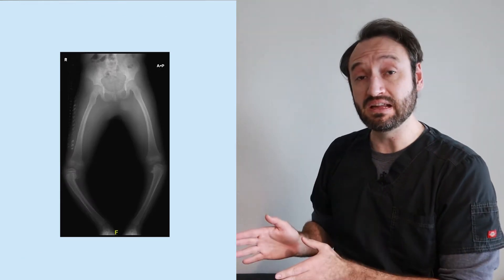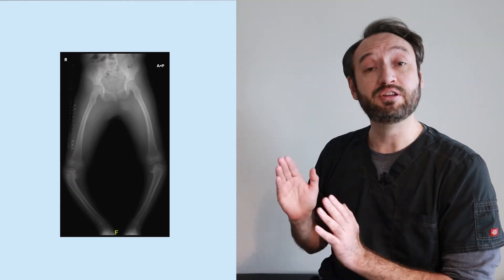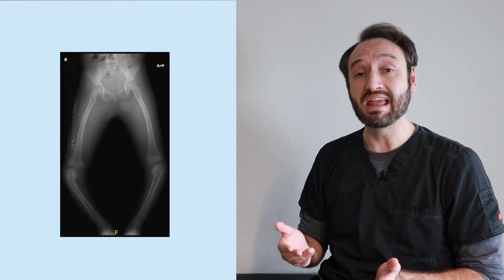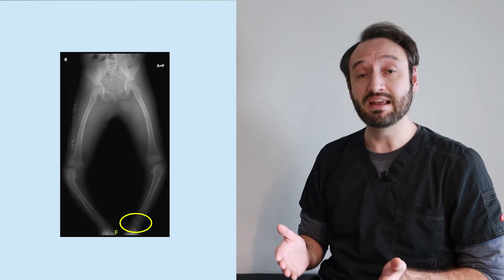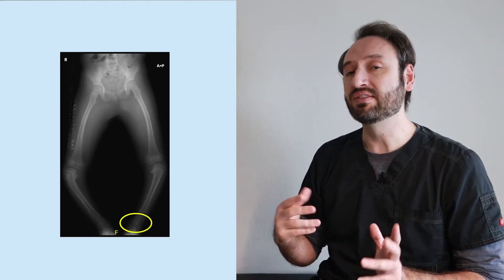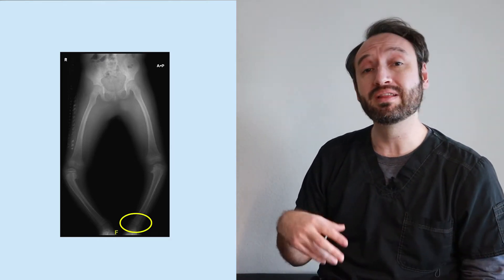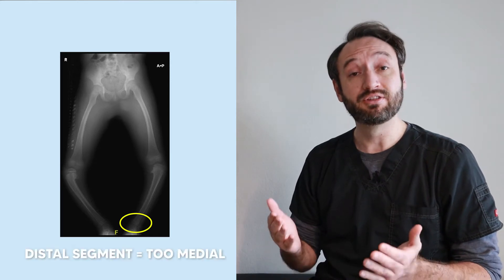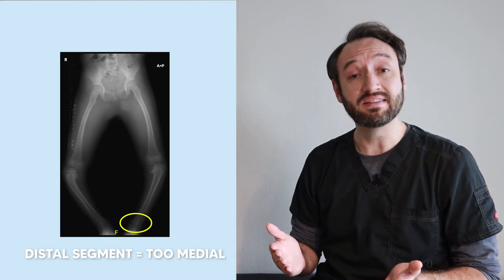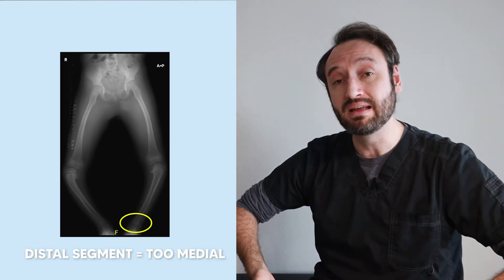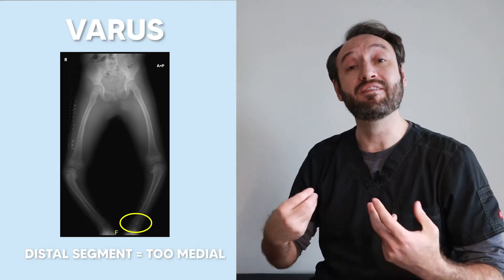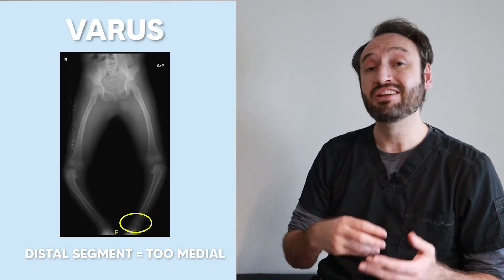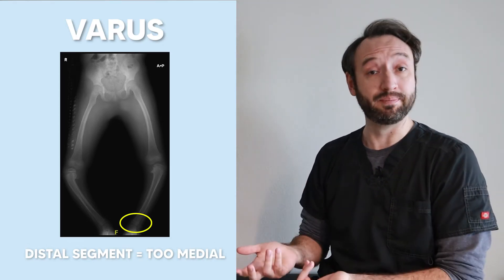Looking at a different knee, we do the same steps: identify the distal segment — again, the distal tibia — then ask whether it's more medially or more laterally angled than it should be. In this case both tibias are angled medially, so this would be a varus, and in medical terms it would be described as a genu varum.